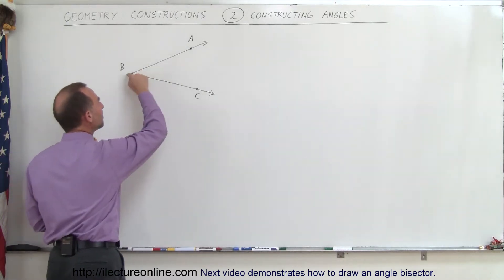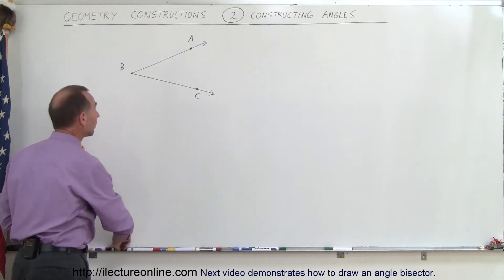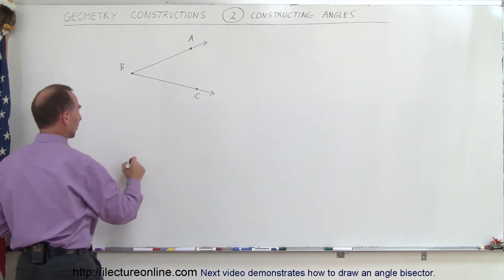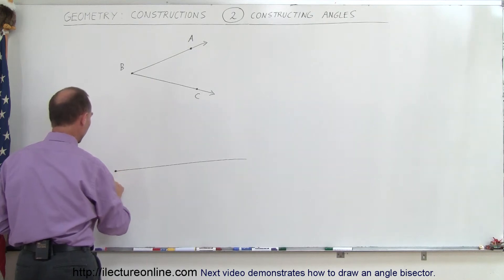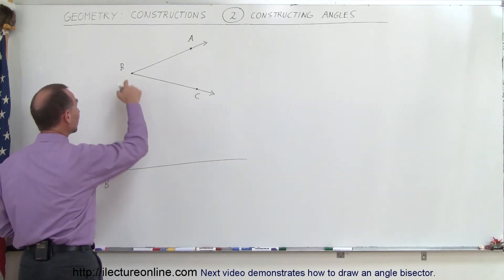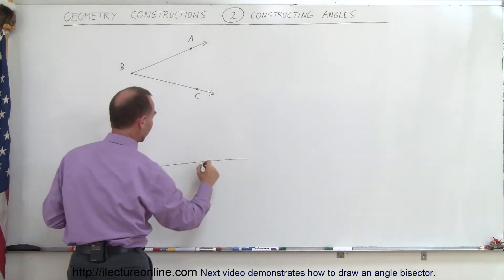So we have an angle from A, B, C right there and we want to construct a second angle. So I'm going to draw the first line right there. This here is going to be, let's call it B'. That's going to be the same point as this. Let's pick another point, let's call this point C'.